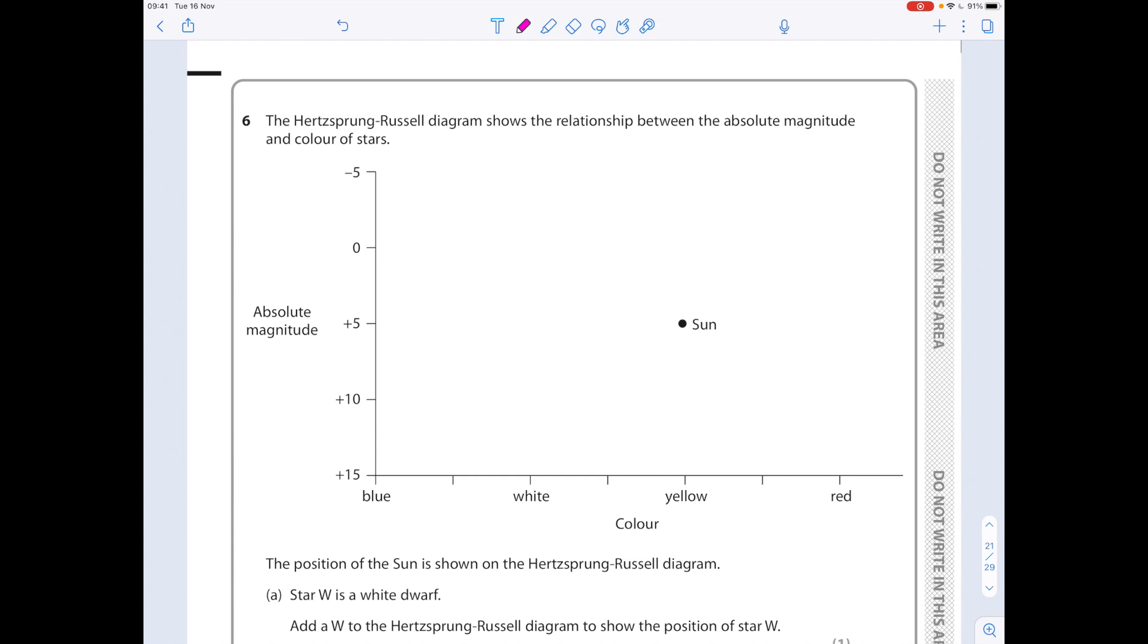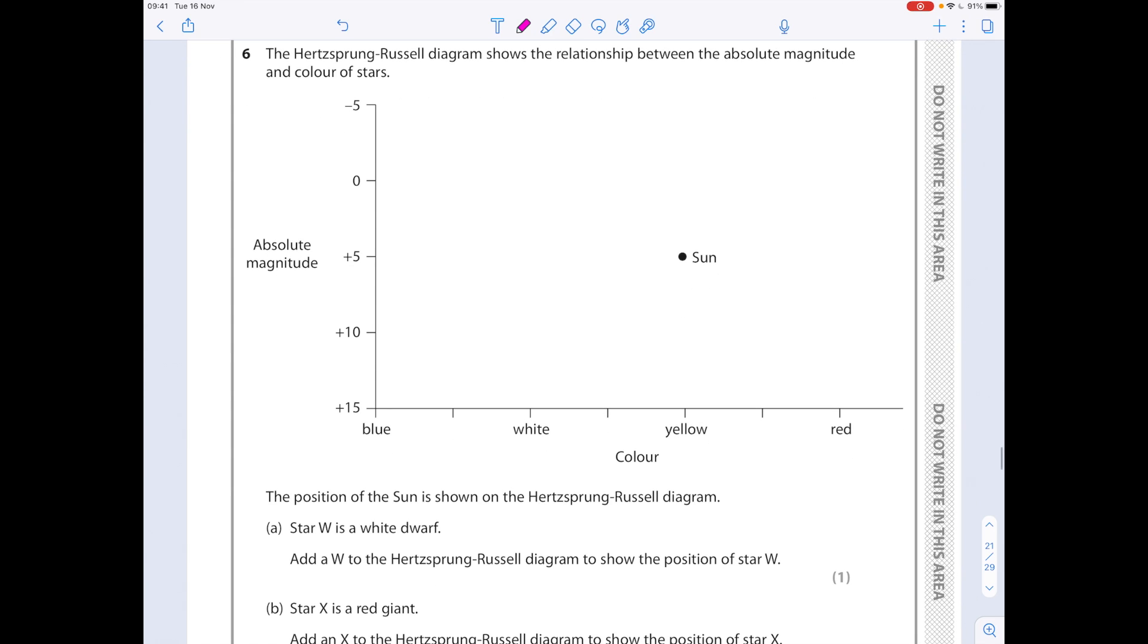So the Hertzsprung-Russell diagram shows the relationship between the absolute magnitude and the colour of stars. The position of the Sun is shown. Star W is a white dwarf. Add a W to the Hertzsprung-Russell diagram to show the position of star W. We just talked about this. Remember in that diagram I showed you, the white dwarfs were around here. It's actually quite useful because we've got the colour here white. We know that they're not going to be super bright. So we're going to pop it down here and label it W. You don't have to be super specific here. You're just showing that you recognise the colour and that it's not the brightest of stars.